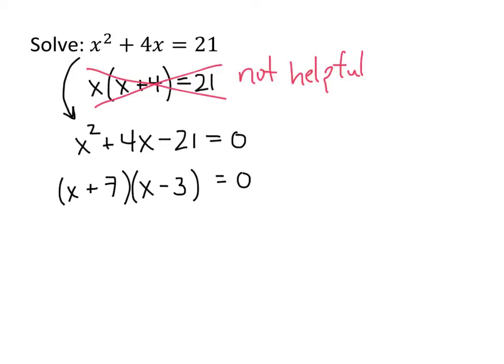And now we're closer to the situation that we had in the previous problem, where we have a factored left-hand side and we have a 0 on the right-hand side. So that means that the only way that the product of these two numbers can be 0 is if one of the two numbers is itself 0. So that means that either x plus 7 is 0 or x minus 3 is 0. That's the only way it could happen.